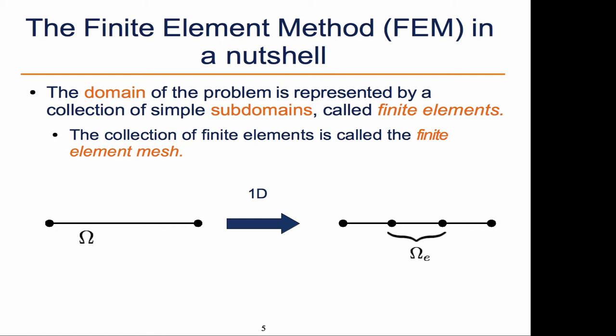And those little subdomains are what we call finite elements. And then basically we apply the Ritz method on each individual element and then assemble them to see what the global solution is.